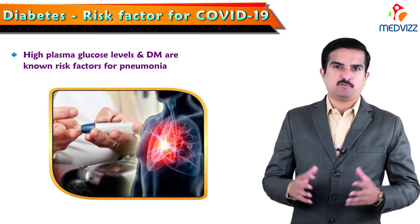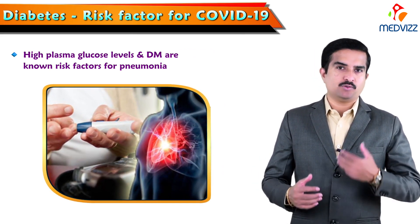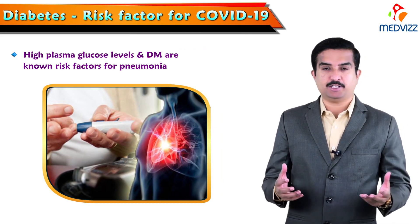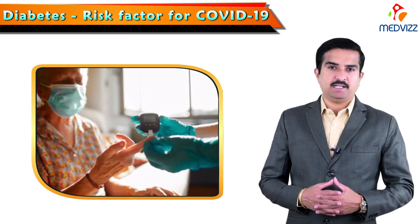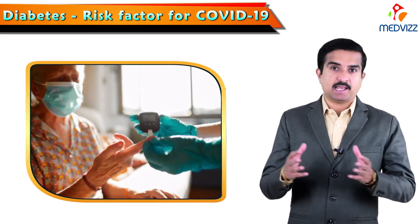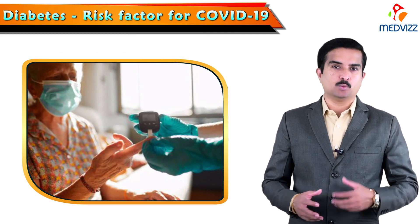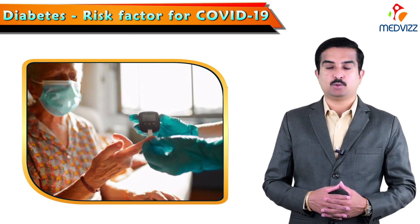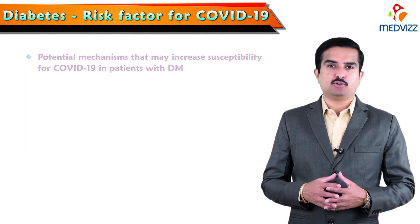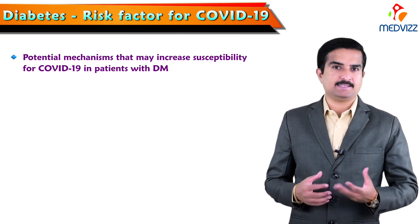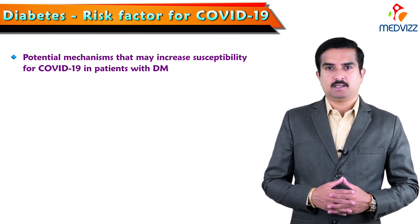Higher levels of plasma glucose and diabetes mellitus are known risk factors for the development of pneumonia. People with diabetes who are hospitalized COVID-19 patients are at a greater risk of worse prognosis and mortality. Here we have to discuss the potentiating mechanisms that may increase the susceptibility to COVID-19 in patients with diabetes mellitus.